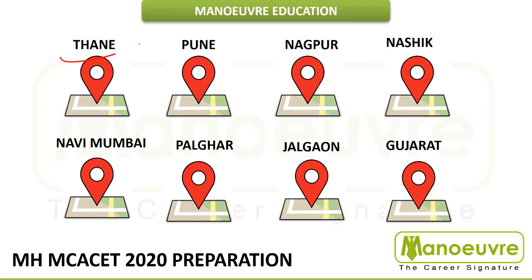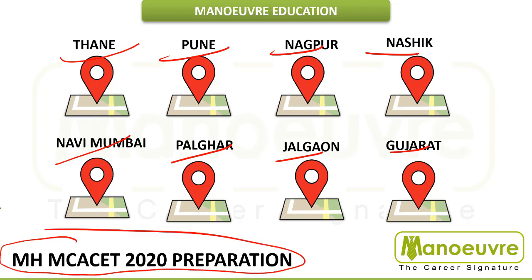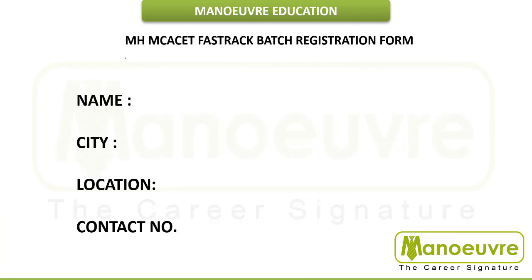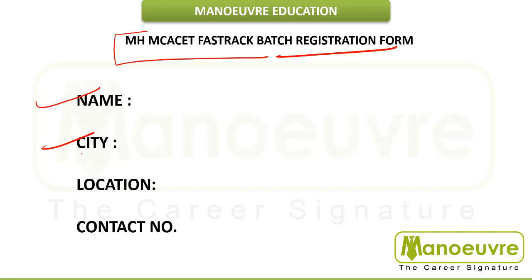People are joining this fast track preparation from Thane, Pune, Nagpur, Nasik, Navi Mumbai, Palghar, Jalgaon, and Gujarat for their MCACET 2020 preparation. If you want to start your preparation, call for enrollment as soon as possible and start. Don't wait for the exam. In the description I have given the link for the registration form for this fast track batch — fill in your name, city, location and contact number and you will get a call back from our counsellor. You can also call the centre directly. Those outside Maharashtra or Mumbai can join our online program — we have books, mock tests, sectional courses and full courses. Kindly visit the website menuadu.com. For any query, you can call 28581455.